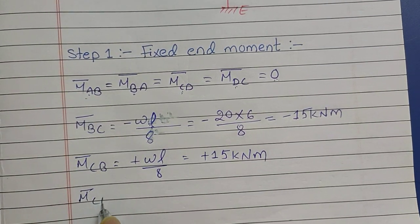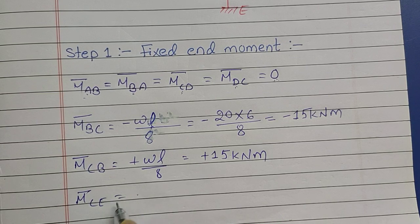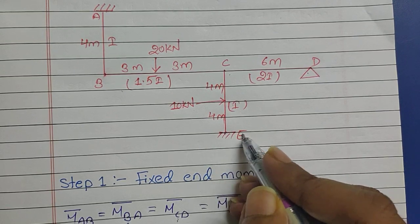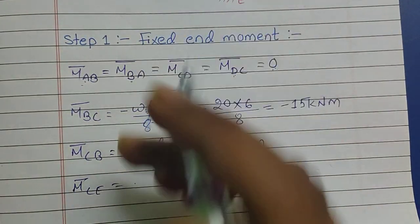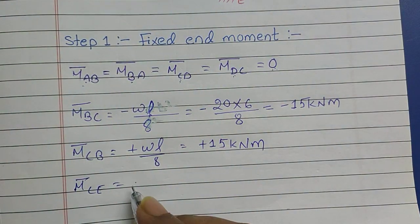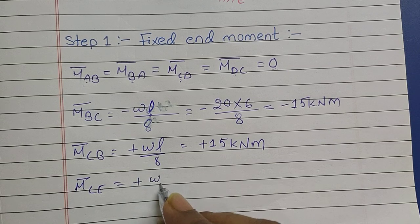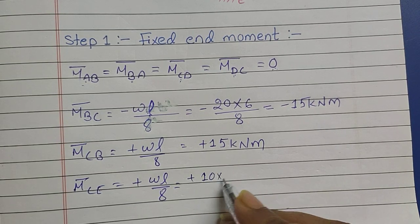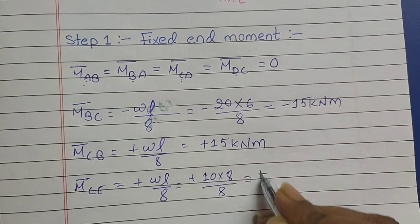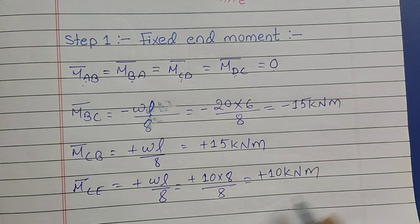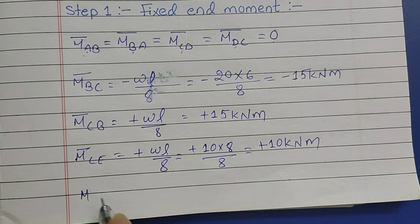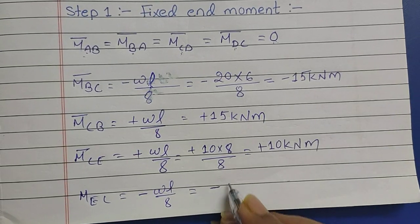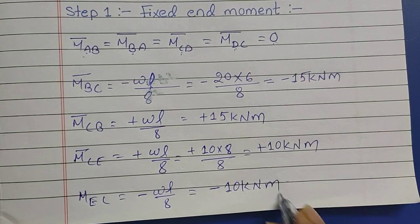Since joint E is fixed, M_CE will be positive and M_EC will be negative. M_CE is equal to plus WL by 8, which equals plus W (10) into L (8) by 8, and it is going to be plus 10 kilonewton meter. M_EC is equal to minus WL by 8, which is minus 10 kilonewton meter. We have now calculated the fixed end moments.